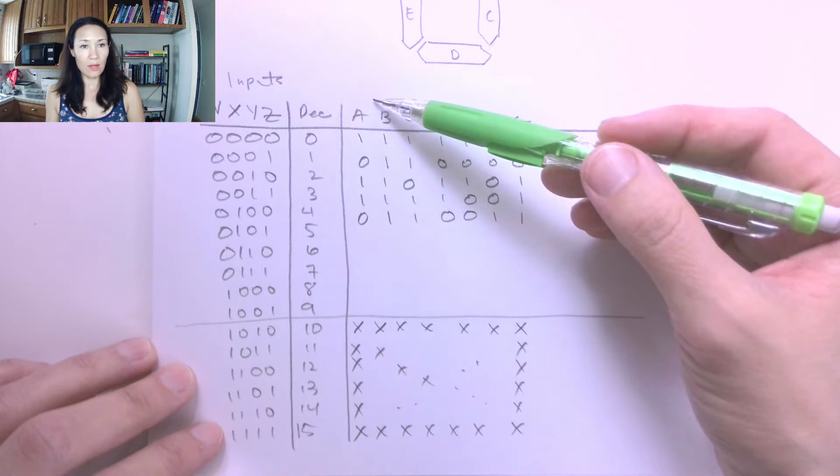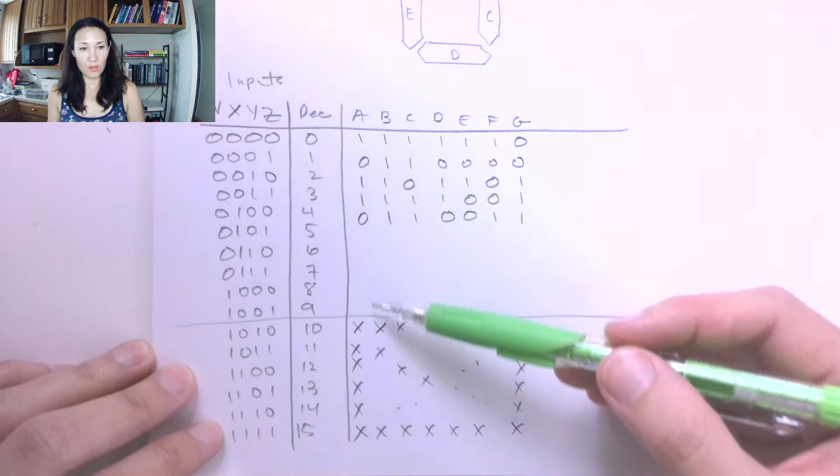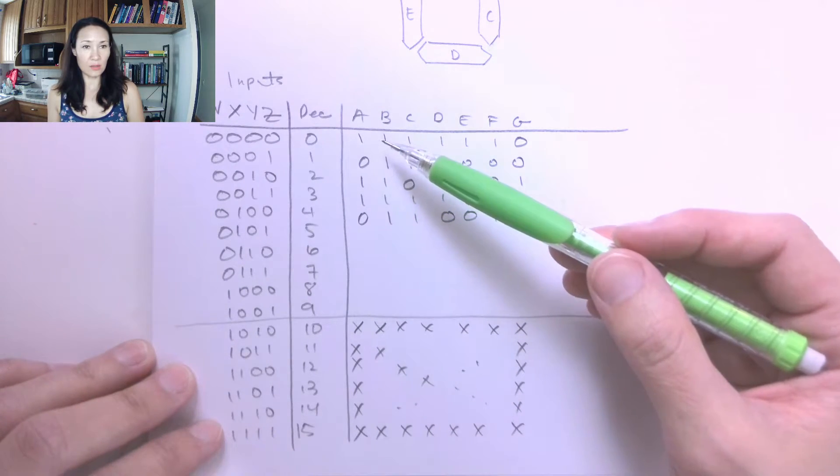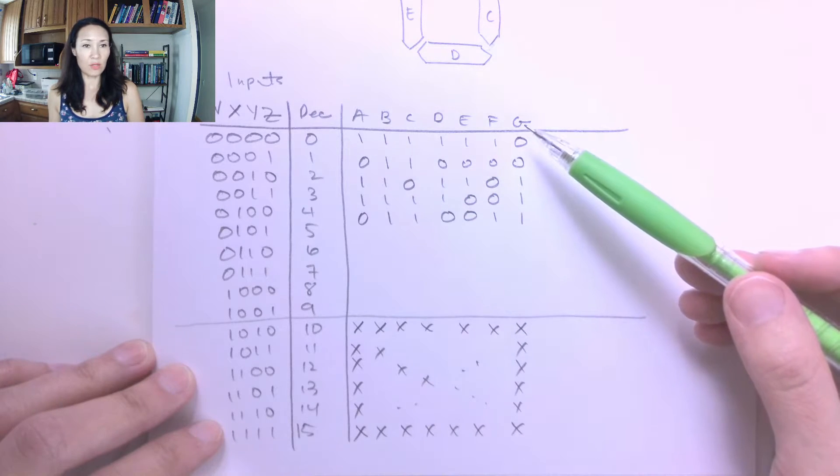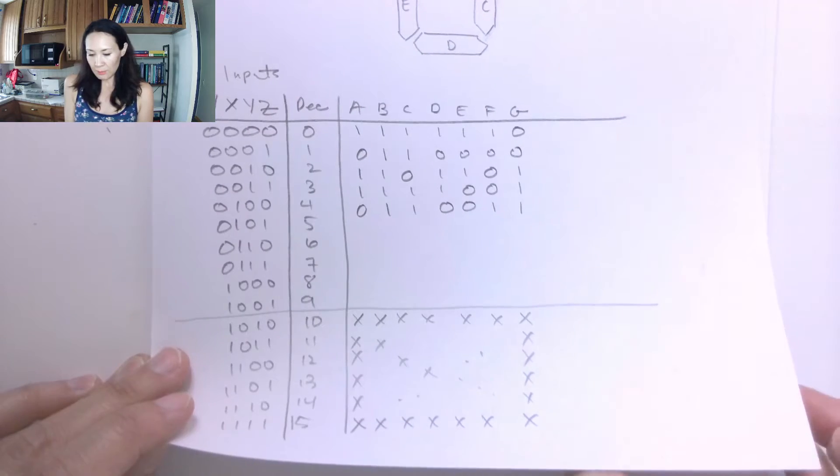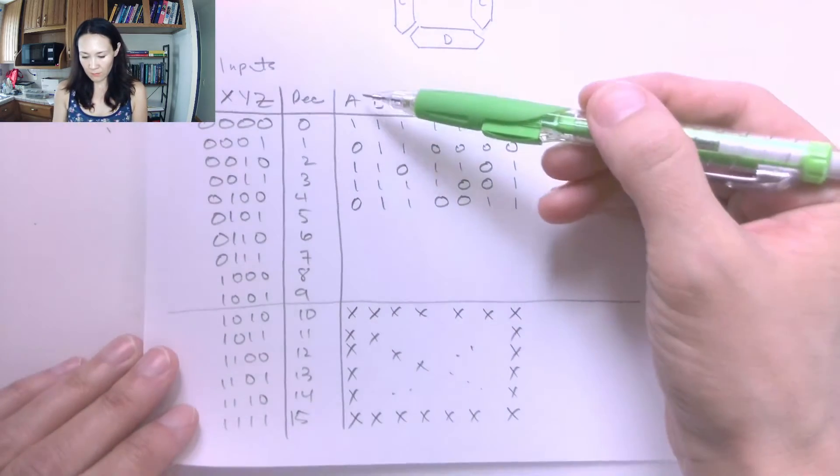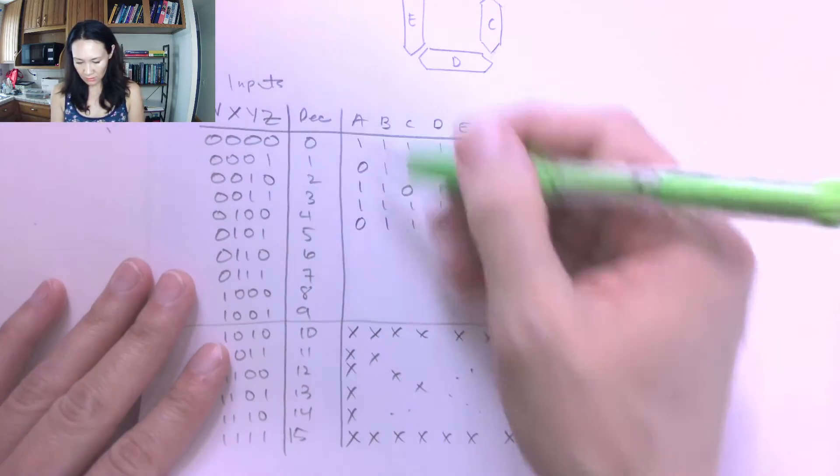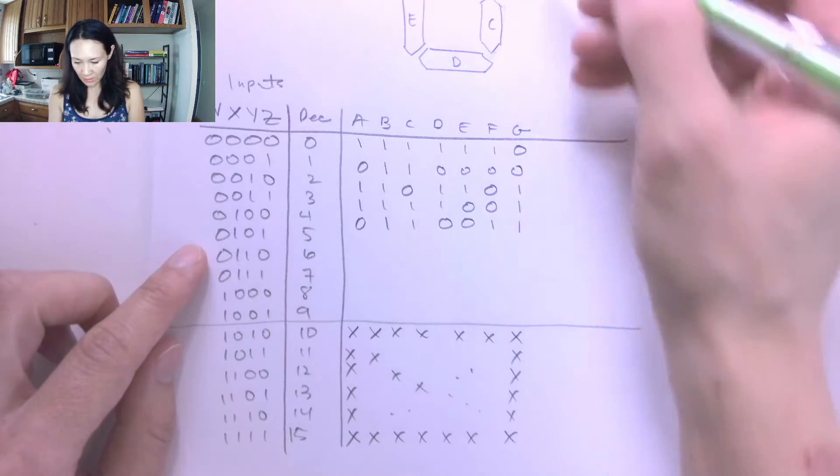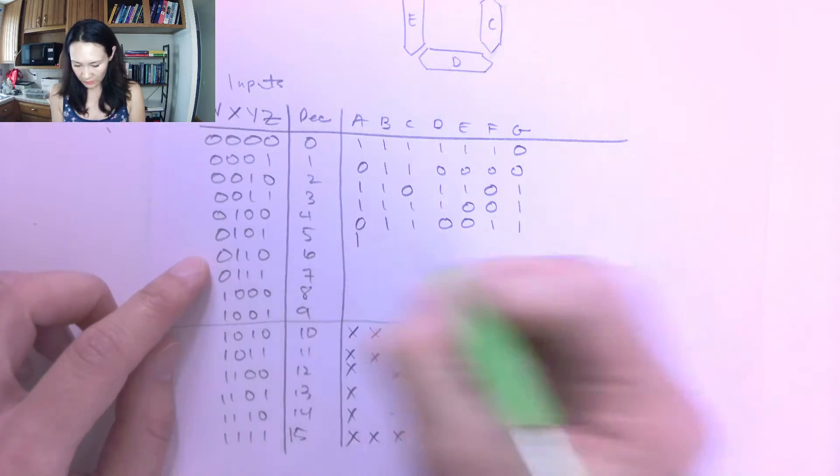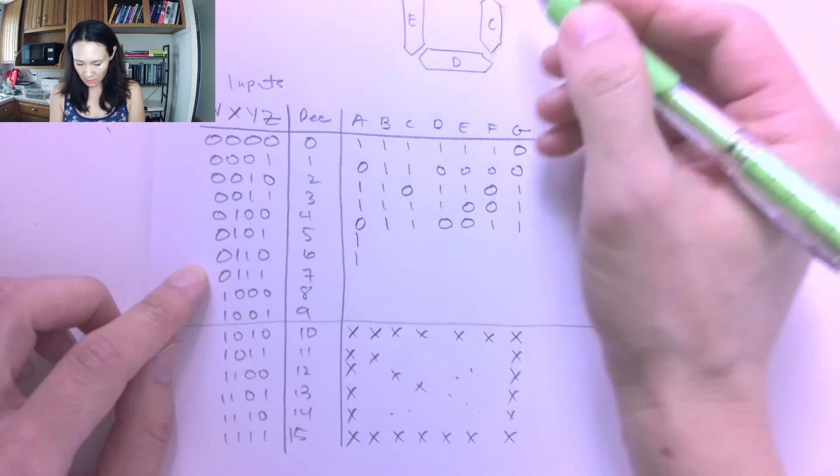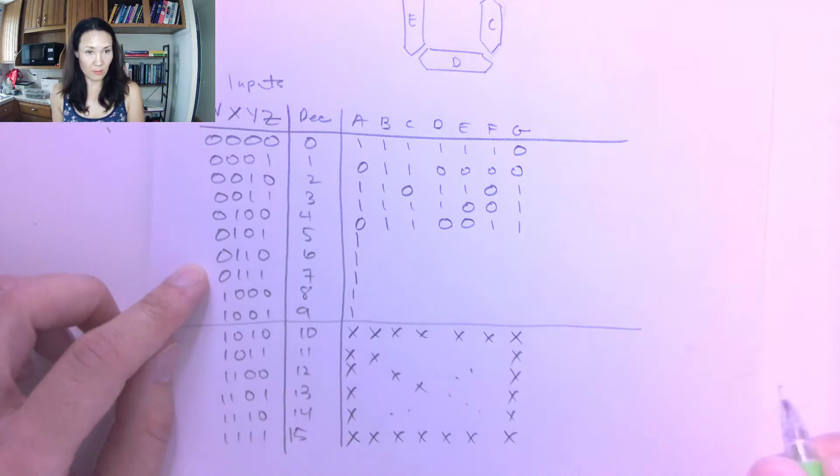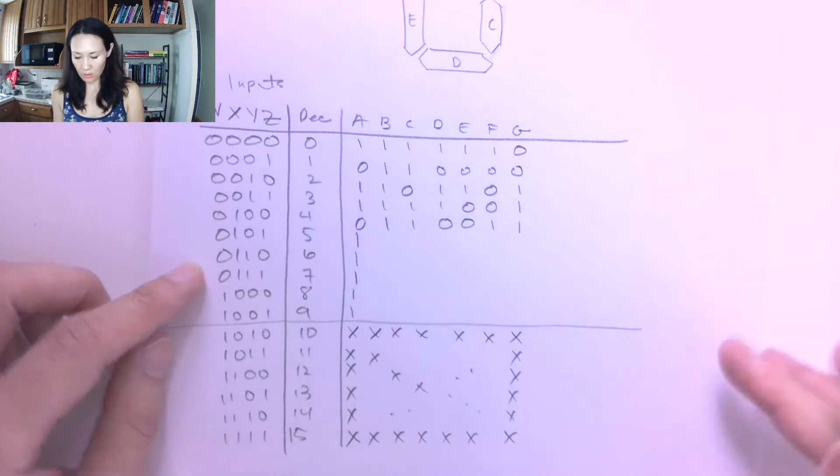I'm going to have seven different functions. So for you, I will go through and do the function for A first. We can do this together, and then as an exercise on your own, you guys can do the output functions for B through G. So let's put this output A into a Karnaugh map. Let me just go ahead and finish this one column for A. For 5, we want this to be on. For 6, we want this to be on. For 7, 8, and 9, we want this to be on. And you guys can figure out the rest of these for the other outputs.